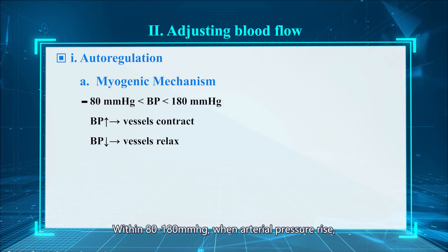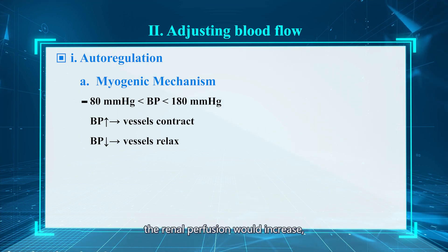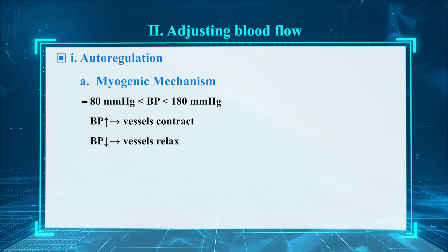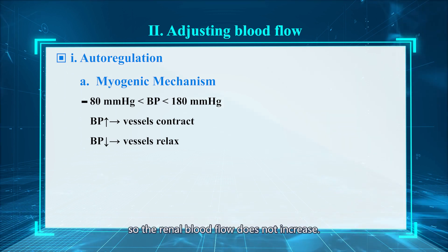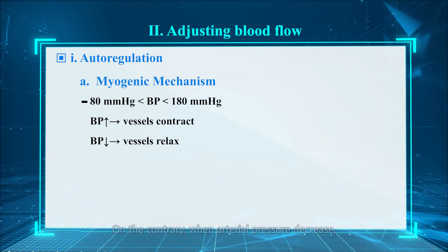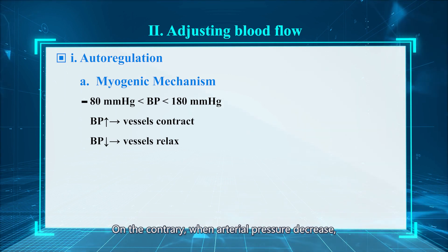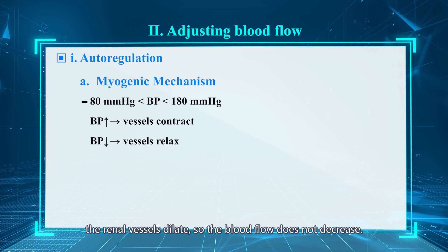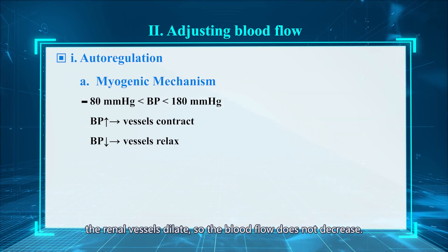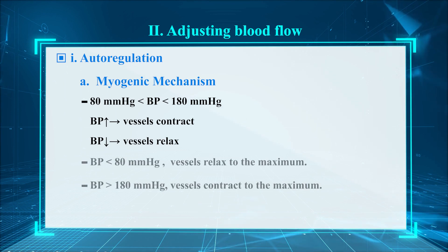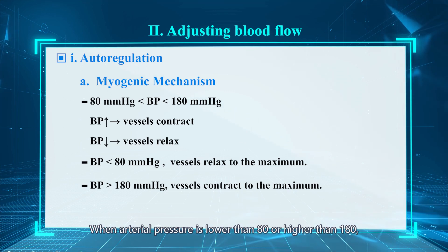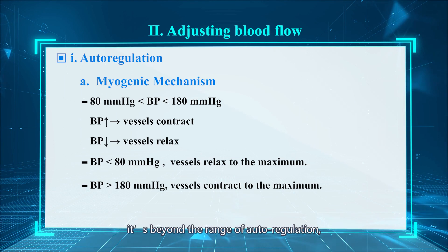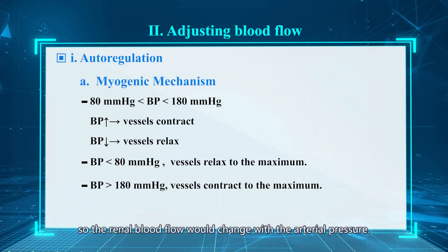Within 80 to 180 mmHg, when arterial pressure rises, renal perfusion would increase, but the renal vessels contract, so the renal blood flow does not increase. Conversely, when arterial pressure decreases, the renal vessels relax. When pressure is lower than 80 or higher than 180 mmHg, it is beyond the range of autoregulation, so the renal blood flow would change with arterial pressure.